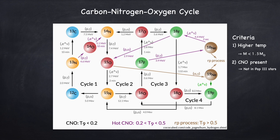Even though POP3 stars, which have never actually been observed, are theorized to have been extremely massive — somewhere between 100 and 1000 solar masses, which means they must have been very hot — because they don't have any CNO catalysts inside them, they have to burn on the proton-proton chain. At least initially. Eventually they will create some carbon, nitrogen, and oxygen, at which point they will switch over to the CNO cycle.